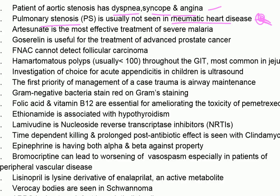Artesunate is the most effective treatment of severe malaria. Goserelin is used for the treatment of advanced prostate cancer. FNAC cannot detect follicular carcinoma.